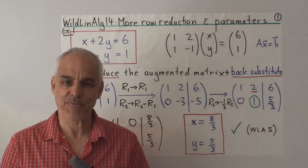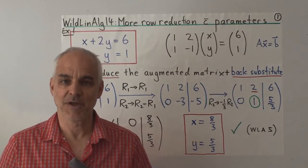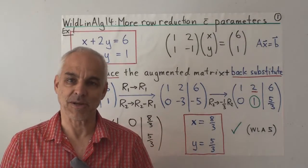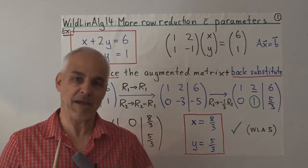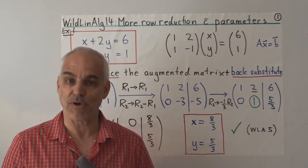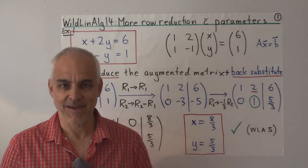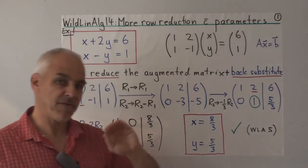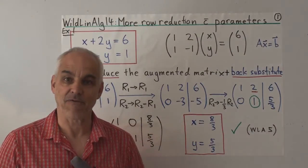Hello, I'm Norman Weilberger. Today we're going to look at row reduction in its entirety — both the first half that we talked about last time and the second half, which is sometimes called back substitution. Row reduction is a very important algorithm in linear algebra. In fact, it's perhaps the most important algorithm, used to solve a wide variety of problems in the subject. We'll start by reminding you how the first half goes, then move on to describing back substitution.